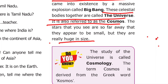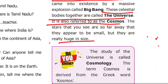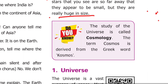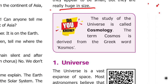The stars that you see are so far away that they appear to be small, but they are really huge in size. Stars are very large but appear small because they are very far away. The study of the universe is called cosmology.